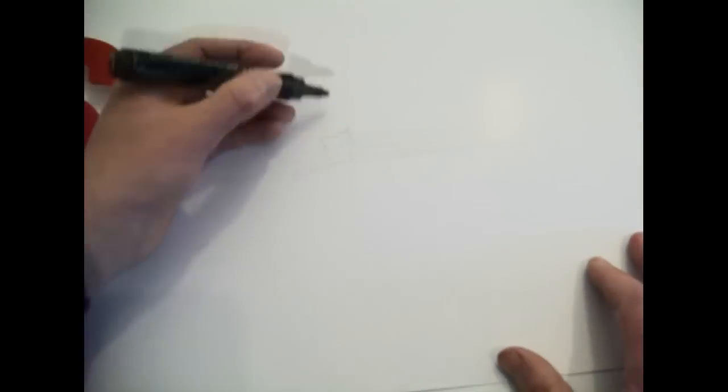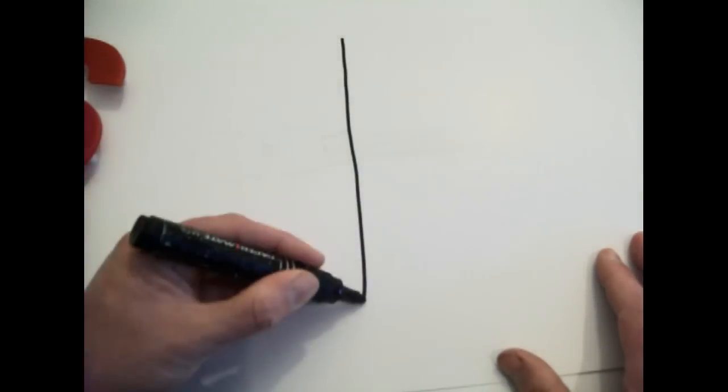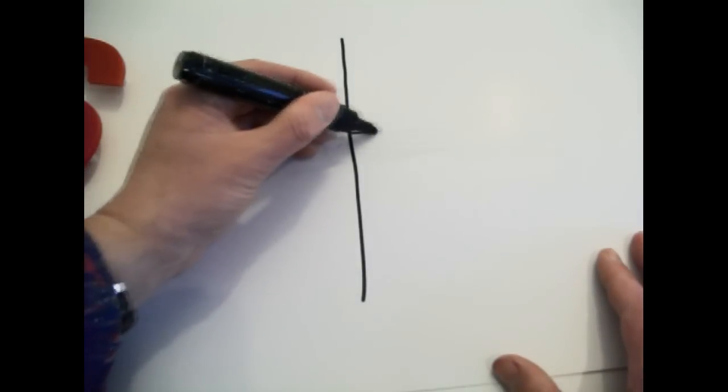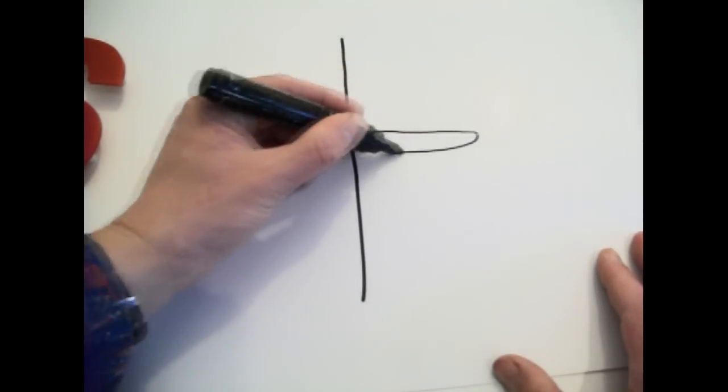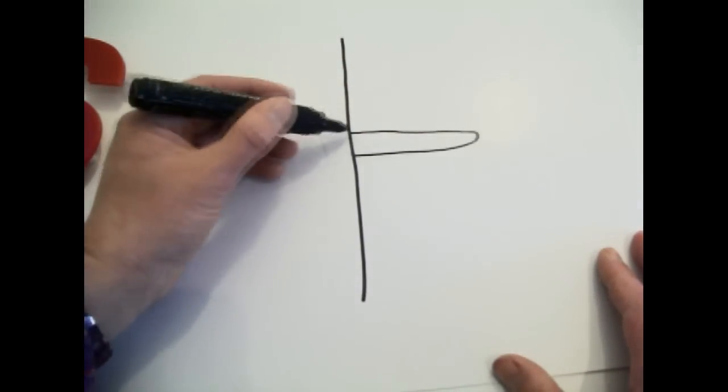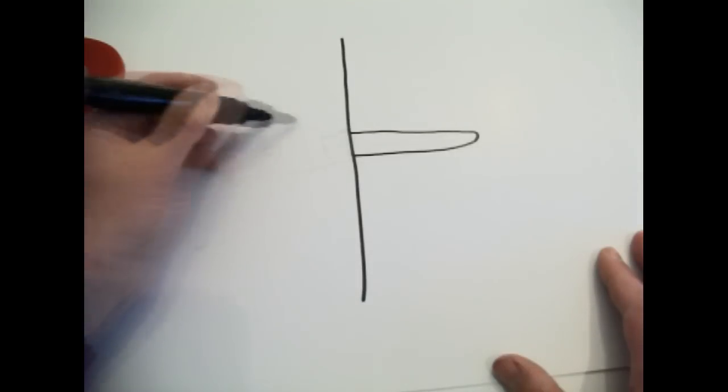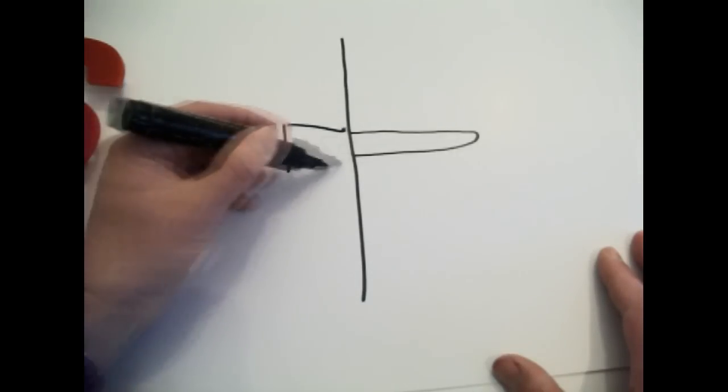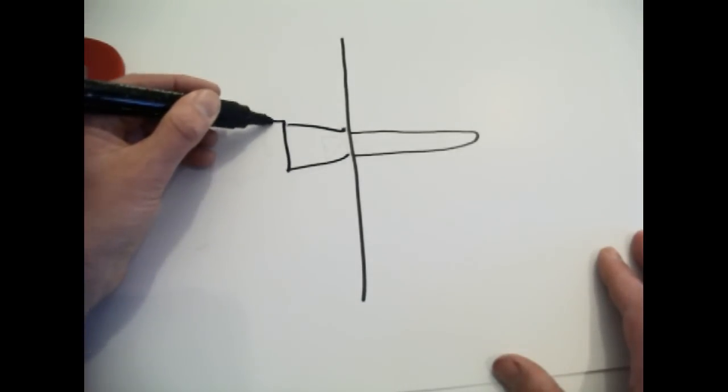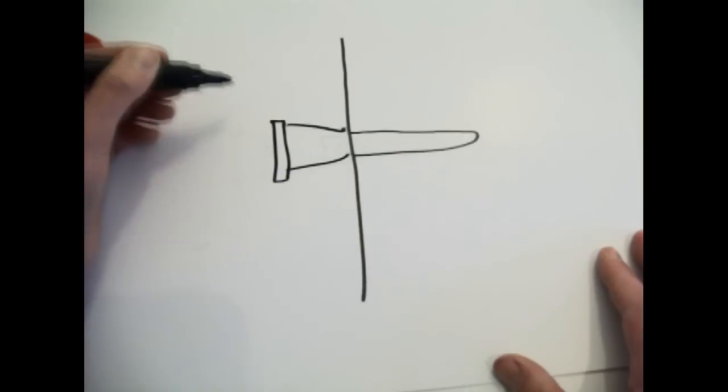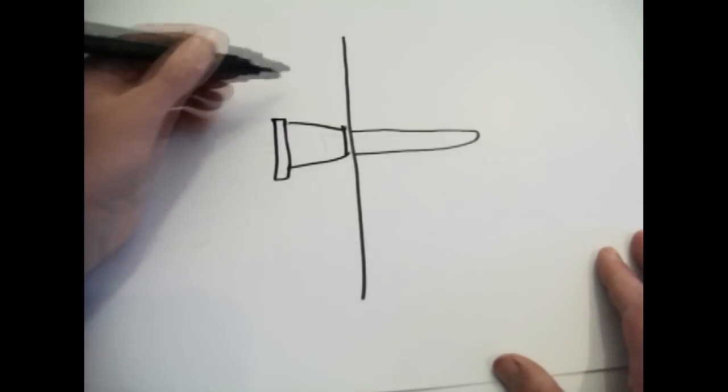So I can illustrate it on paper. Say if you had, take that as the wall. You have the plug, the yellow plug. You then have, that say would be the fixing.